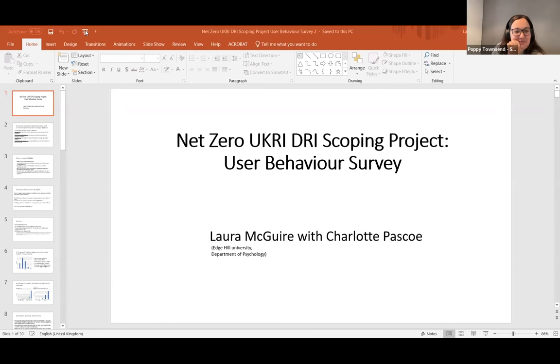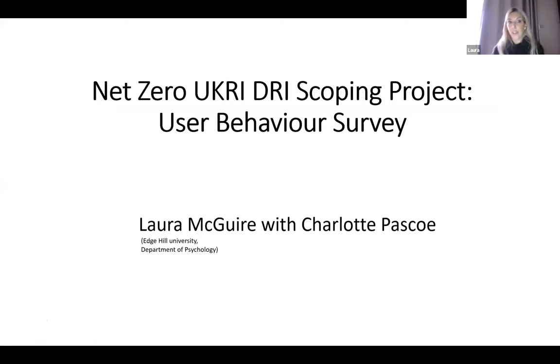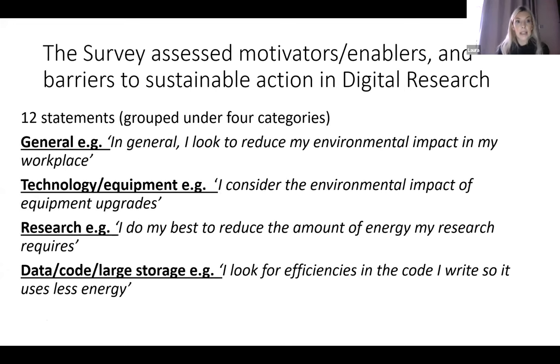If I go too fast everybody, I've got lots of things to fit in within this 10 minutes, so I'll clarify anything at the end. This part of the project was the user behaviour survey, and I've been working on this with Charlotte. Charlotte and I designed a survey with motivators and barriers, and we sent it out to get feedback. We received lots and lots of feedback from everybody and we really did use that to inform the final draft — so thank you to everybody who had an input. The survey assessed motivators, enablers, and barriers to sustainable action in digital research infrastructure. There were 12 statements grouped under four different categories: general behaviour around the workplace, technology and equipment, research and data code, and large storage.